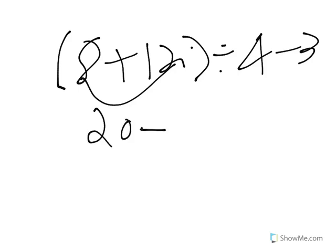Then I break everything else down. So now I do 20 divided by 4, because I know multiplication and division come before adding and subtracting. And 20 divided by 4 equals 5.